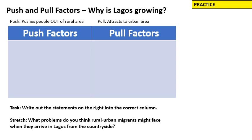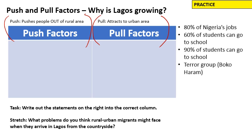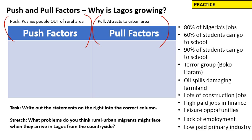Things that attract people to Lagos are called pull factors. Things that push people out of the rural areas and make them want to leave are called push factors. On the right we have a list of push and pull factors. Write two headings — push factors on the left, pull factors on the right — and we will organise together which factors are push and which are pull. Let's do one together, then you can pause the video and continue.